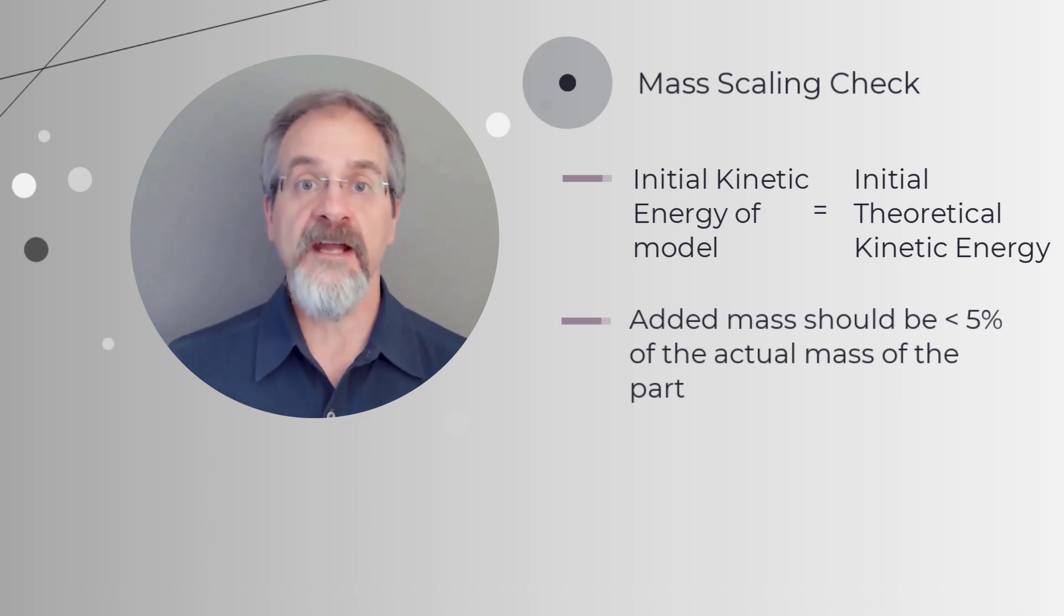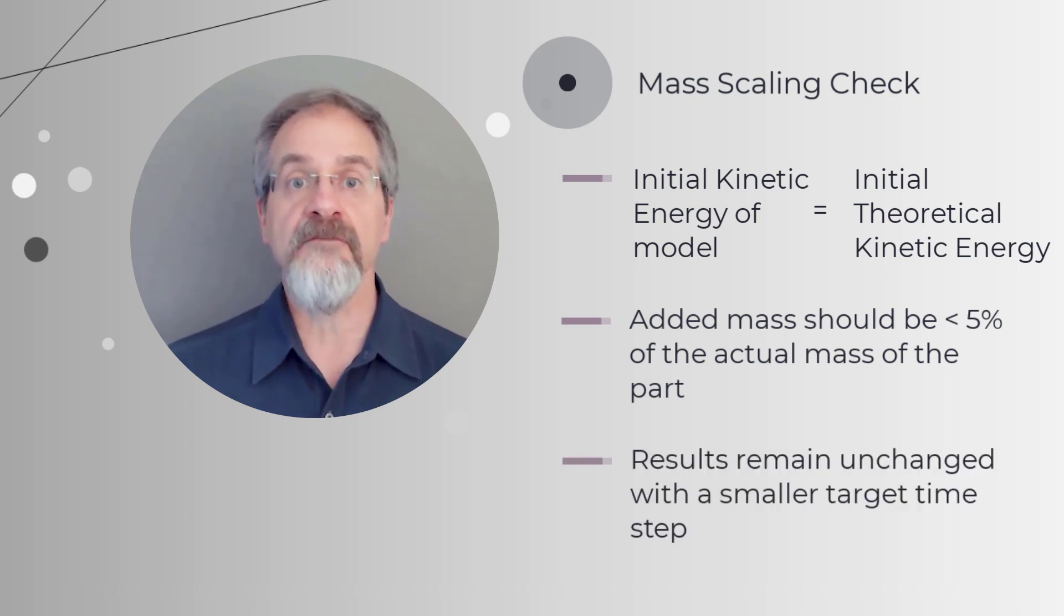A third way to ensure the accuracy of our results would be to solve the problem again using a reduced time step. If the results do not change significantly, we can safely conclude that mass scaling is not changing the physics of the problem.